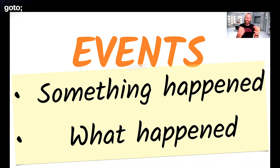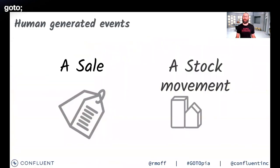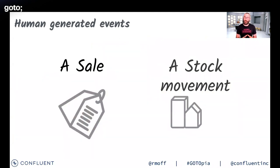Events are super powerful because they tell us that something happened and what happened. Events happen continually — they are unbounded. An example of human-generated events: someone walks into a shop, or clicks on a website, and they order something. That's an event. It happened at a point in time, something happened — it was a purchase, they bought a Snickers bar. Or we move stock around a warehouse — something happened, stock was moved at a point in time, from this warehouse to that warehouse. These are events.